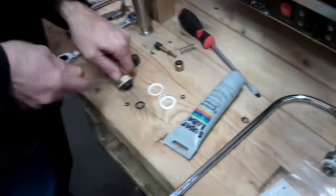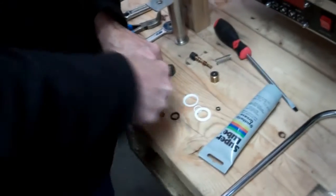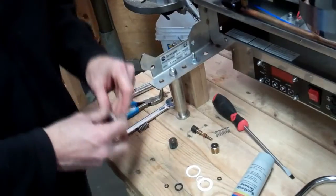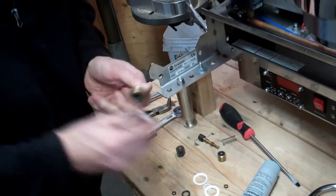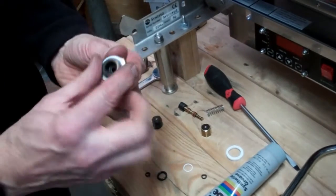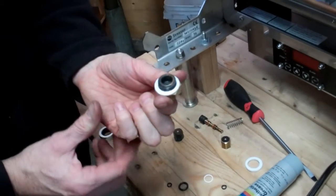This sometimes takes a little bit of force to get it to come apart. So the new gasket goes over the steam valve nut like this.